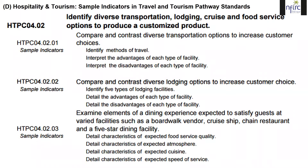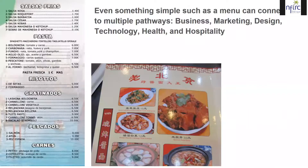Even something as simple as a menu can connect to multiple pathways. We could shift this from a dessert activity to having more meaningful connections in the real world — this falls into the somewhat authentic category because it simulates the real world. But a restaurant owner actually thinks about more complex questions: Who are my customers? How can I design a menu with appealing images and text? What colors, logos, and fonts? Do we produce our own photos or engage photographers? And who owns the rights to the photos?